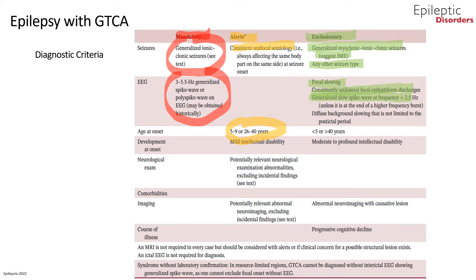An MRI is not required in every case but should be considered when alerts raise clinical concern for a possible structural lesion. In resource-limited regions, epilepsy with generalized tonic-clonic seizures alone cannot be diagnosed without an interictal EEG showing generalized spike and wave, as one cannot exclude focal onset without EEG.